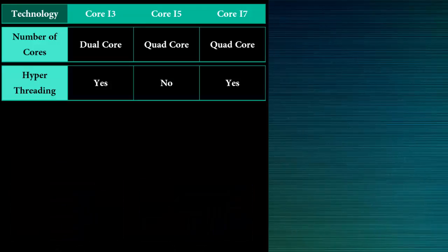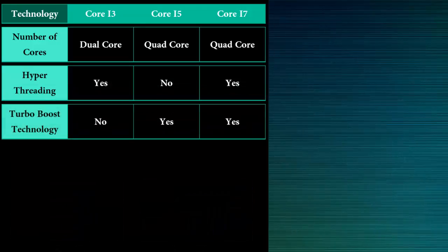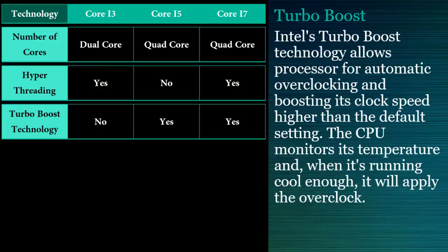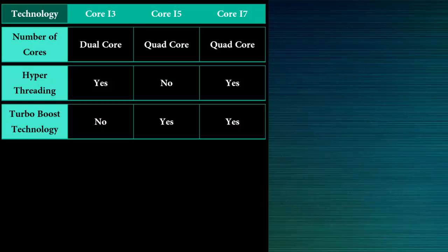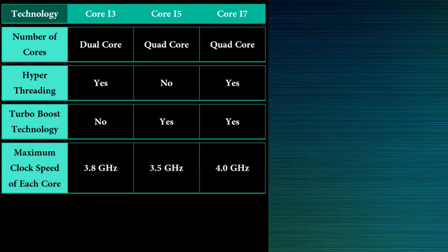Turbo Boost: Core i5 and Core i7 support Turbo Boost technology whereas Core i3 does not. Intel Turbo Boost technology allows the processor to automatically overclock and boost its clock speed higher than the default setting. The CPU monitors its temperature, and when it's running cool enough, it will apply the overclock on the processor.